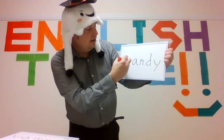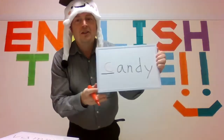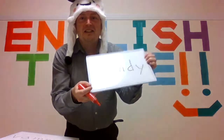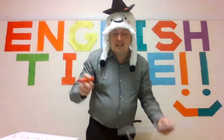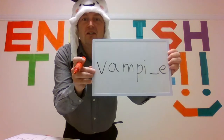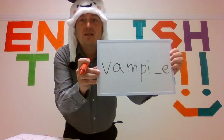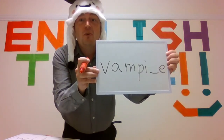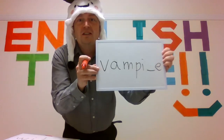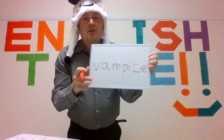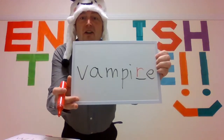The answer is C. Please repeat: candy, candy. I want to eat Halloween candy! The next one is vampire. Five seconds: five, four, three, two, one. Do you know the answer? The answer is R.